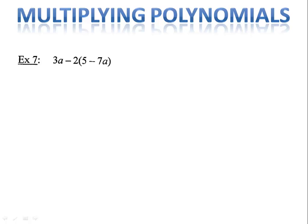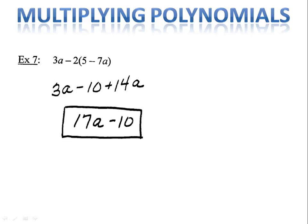Example 7 is really the same thing. In this case we're distributing the negative 2. We have 3a minus 10 plus 14a. Notice I have plus 14a because I distributed a negative 2, not a positive 2. Now I can combine like terms and I have 17a minus 10.